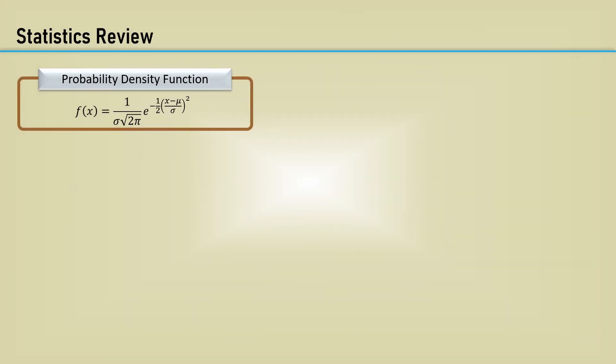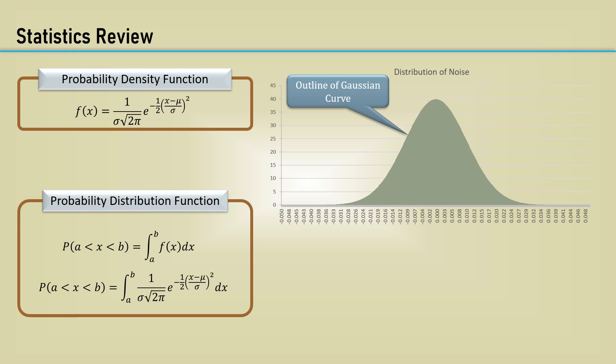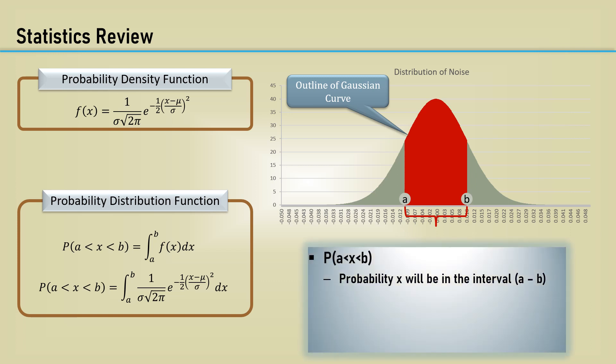Let's begin with a short statistics review. You are probably familiar with the normal or Gaussian probability density function. It is basically the outline of the Gaussian curve. The probability distribution function is the integral under the curve. The probability that the random variable x is between the interval from a to b is the integral. In this case, the random variable is the noise voltage.